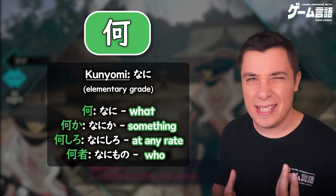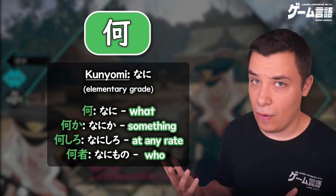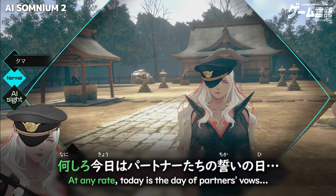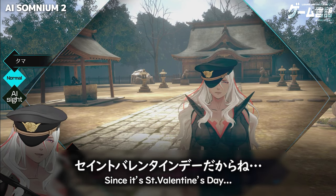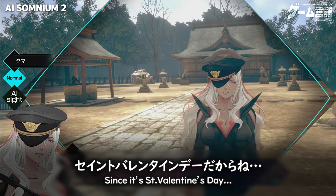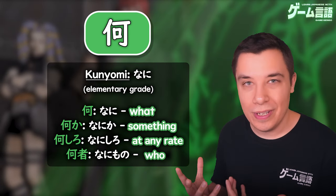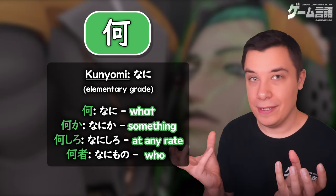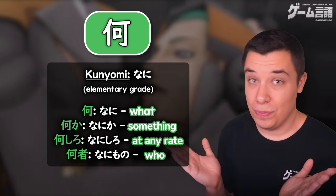It's also used in the phrase Nanishiro, meaning 'at any rate', as well as Nanimono, meaning 'who' or 'what person' — kind of like 'what person'.